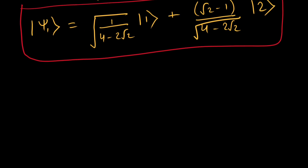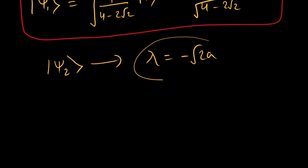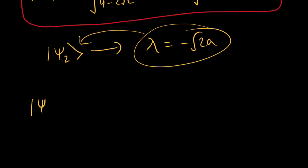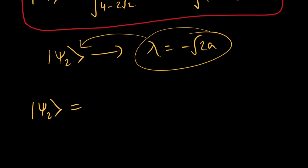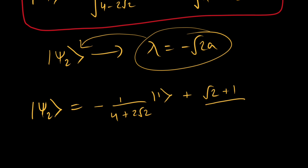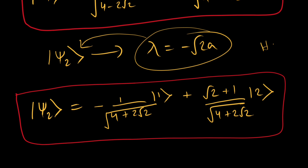For ψ₂, you can calculate it the same way using λ = −√2·a. The answer comes out to be ψ₂ = (−1/√(4+2√2))|1⟩ + ((√2+1)/√(4+2√2))|2⟩. Take that as a small homework — it's just a simple eigenvalue calculation. If you like this content, please support the channel by subscribing, and I'll see you in the next video.